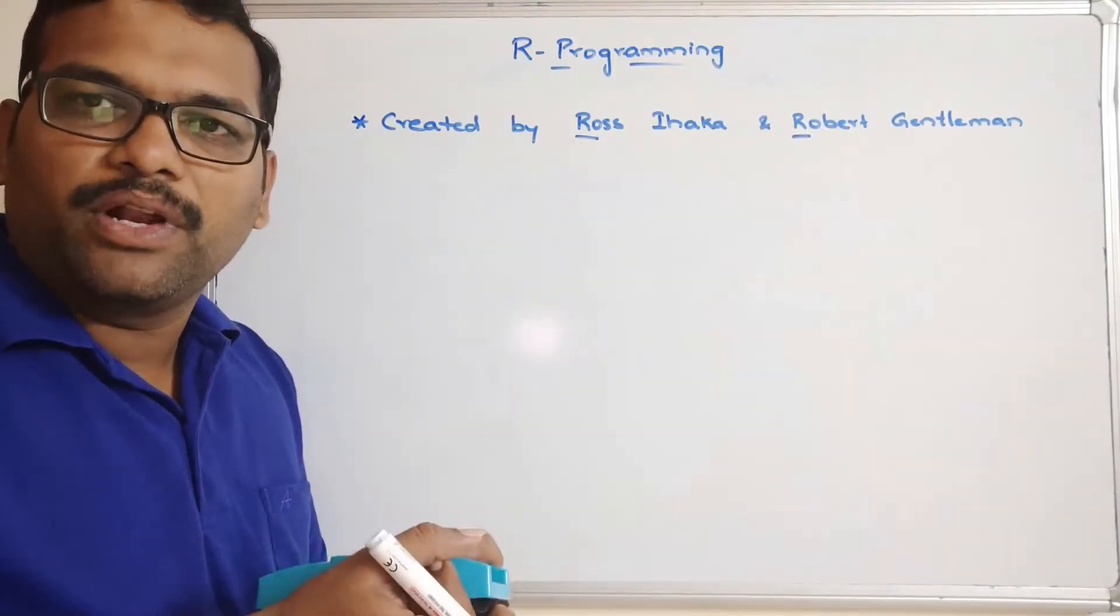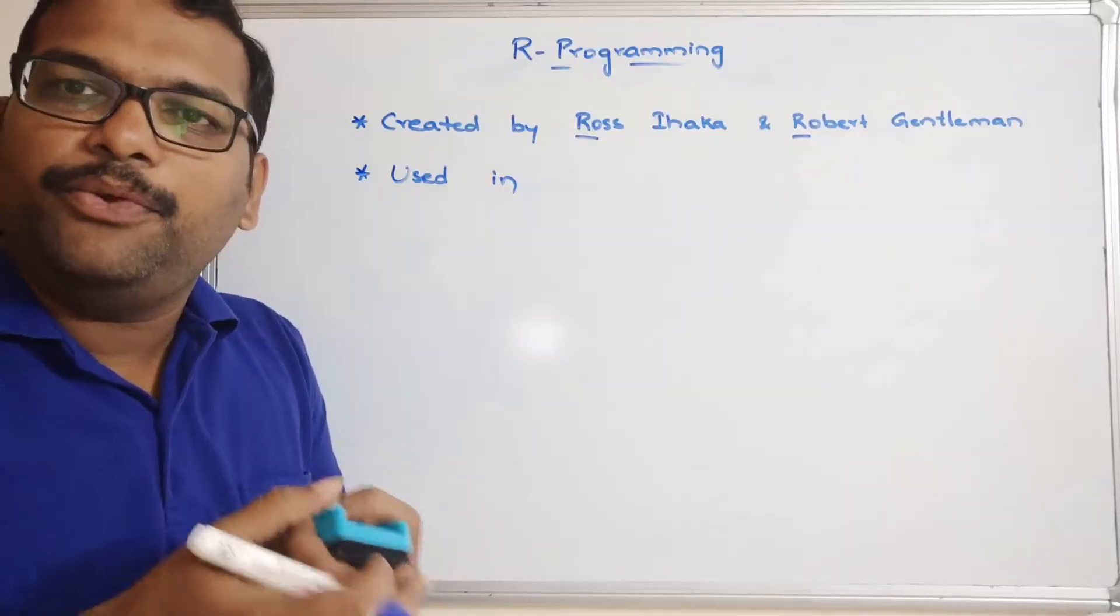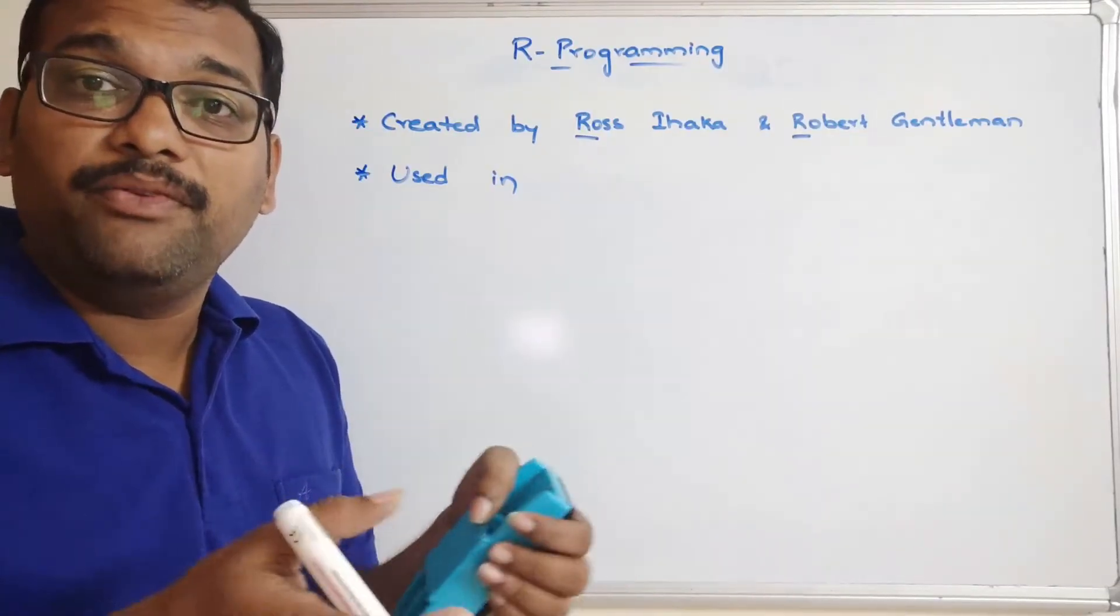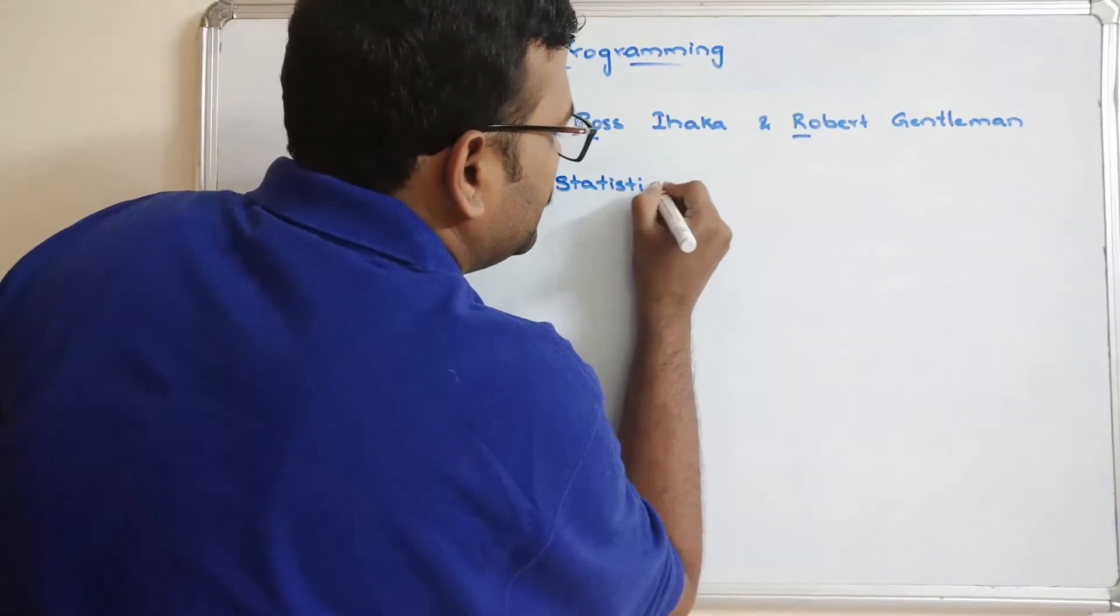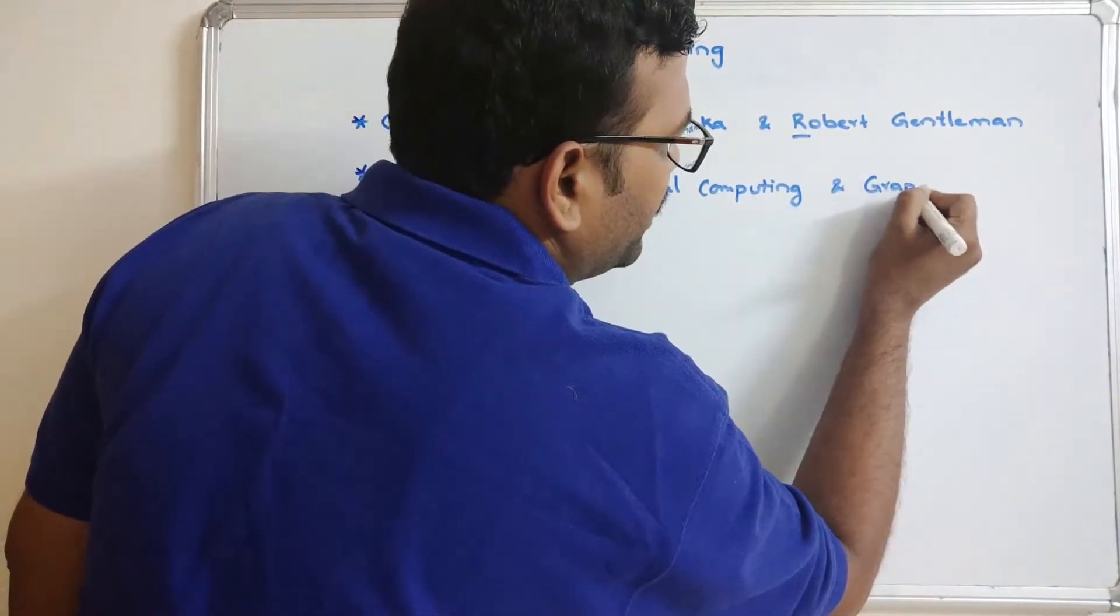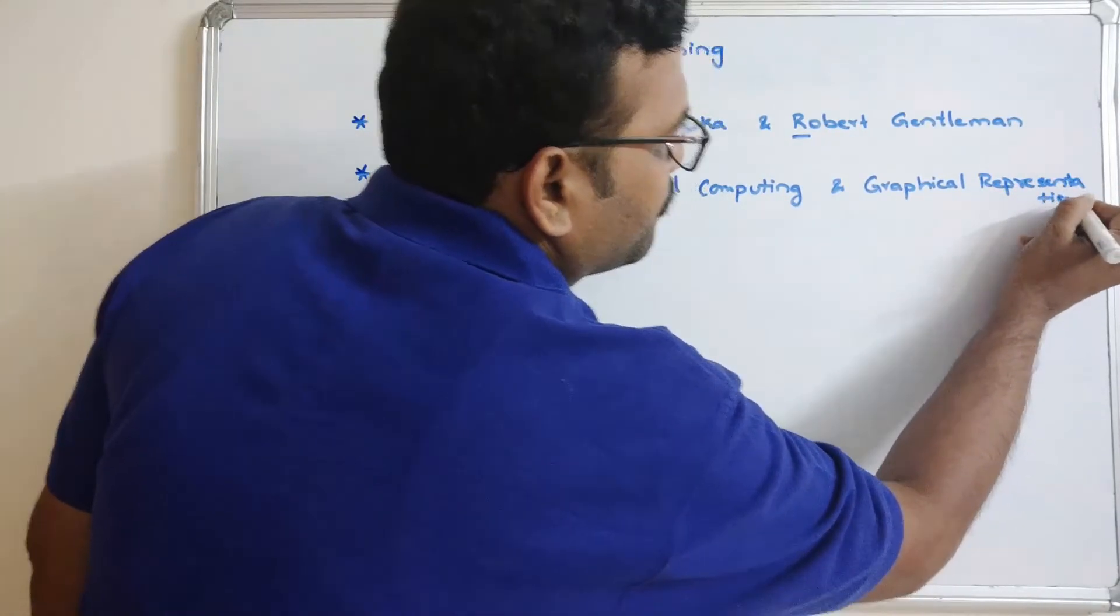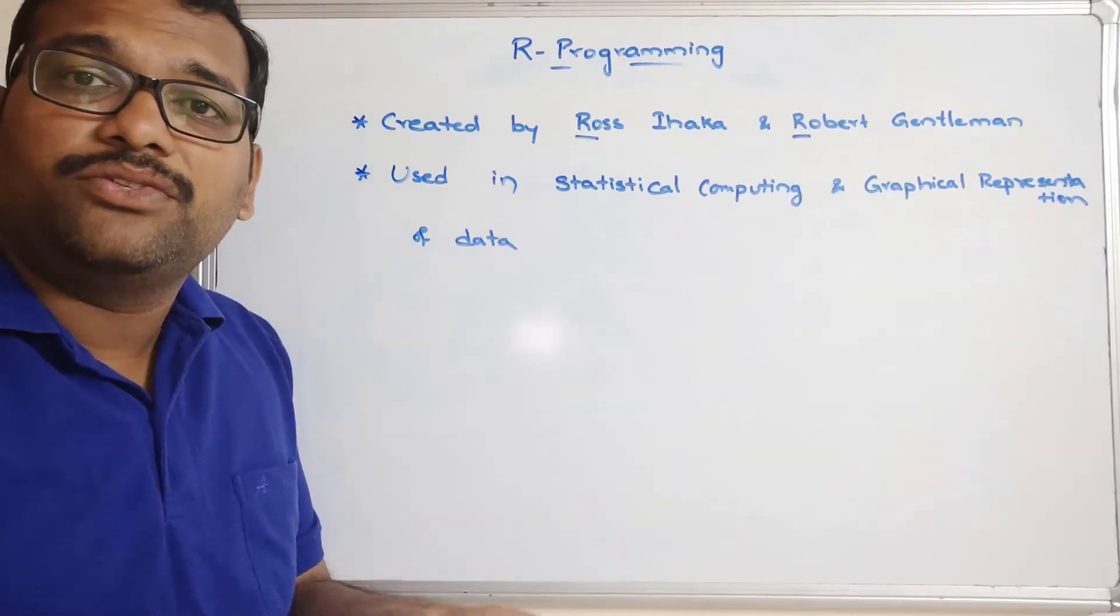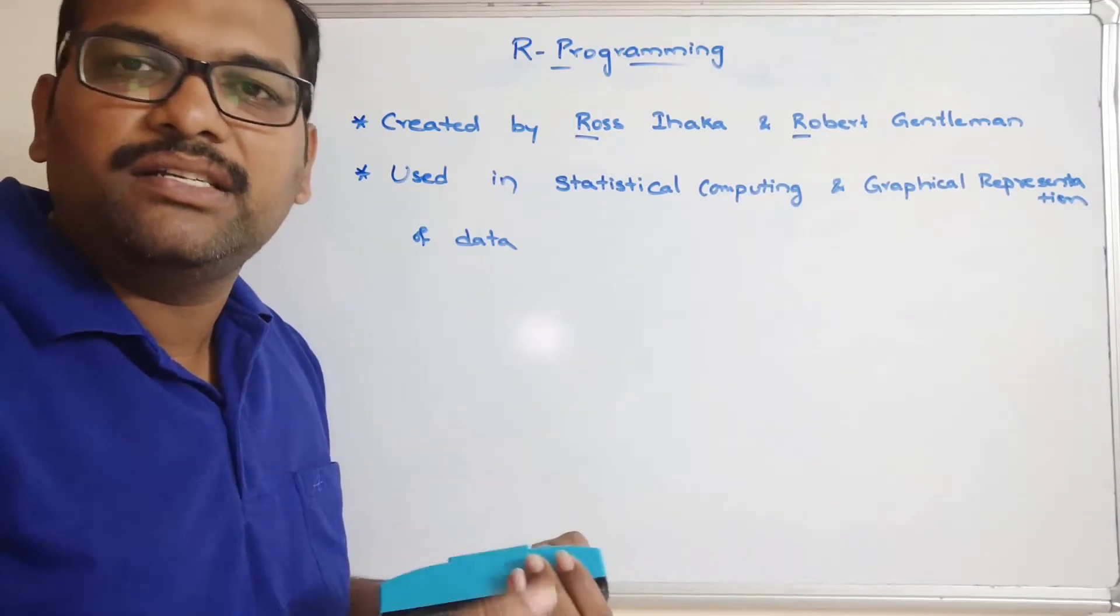Where are we using this R programming? Mainly this R programming is used in statistical computing and the representation of data in terms of graphs. Used in statistical computing or calculations and graphical representation of data. R programming is also having a wide variety of packages so that we can make use of those packages and the functions in the packages.